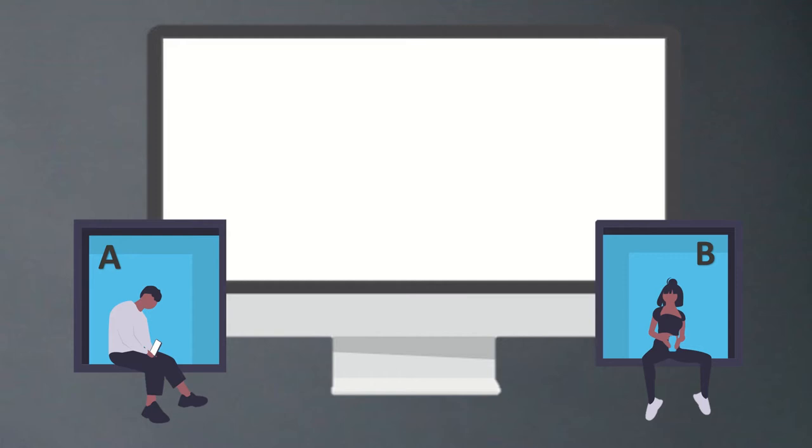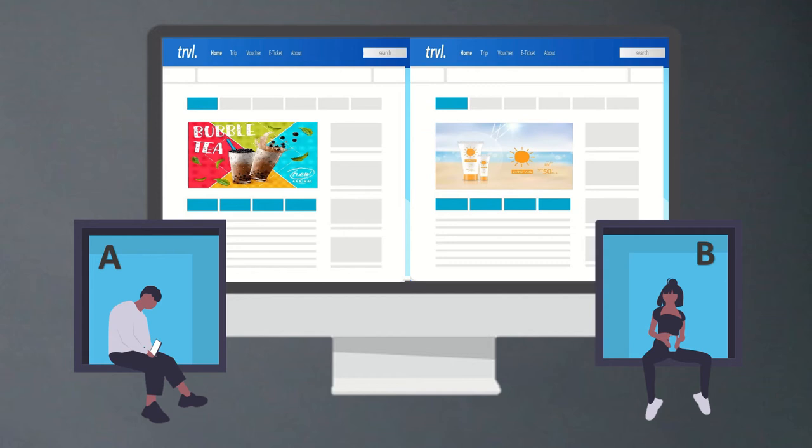In A-B testing, website visitors are randomly assigned to two groups, A and B, which are shown alternative versions of a web page — for instance with a different advertisement being displayed. By comparing the behavior of both groups in terms of the click-through or conversion rate, the best version can be selected.